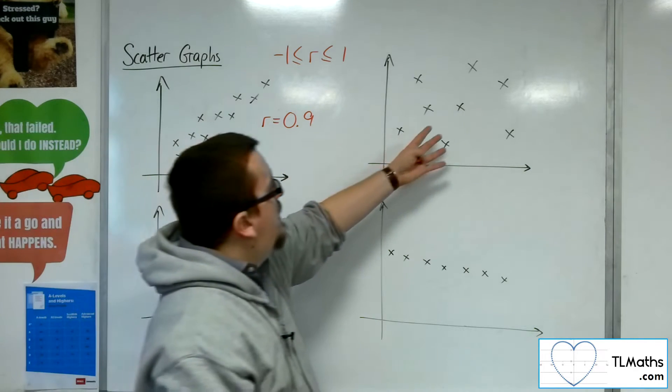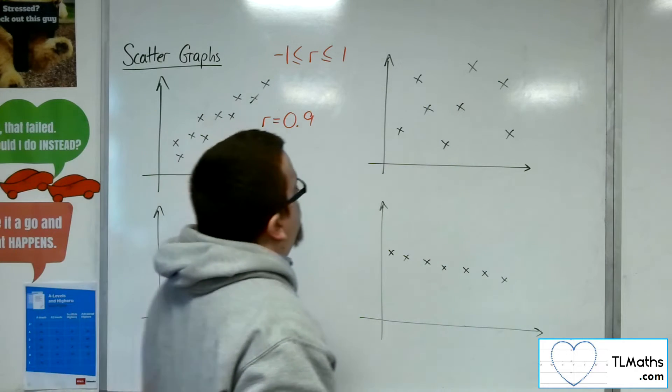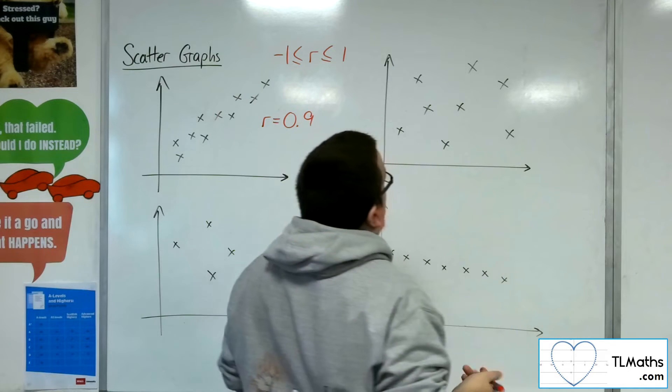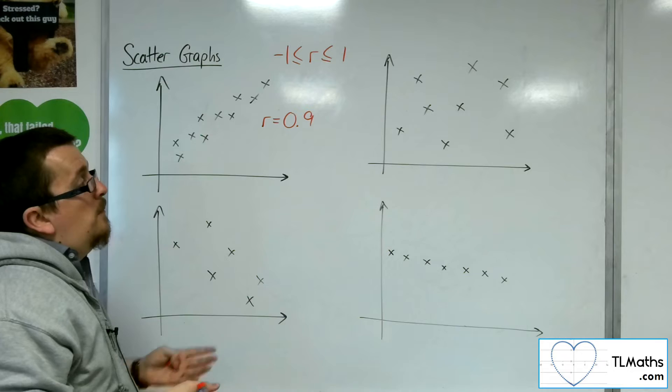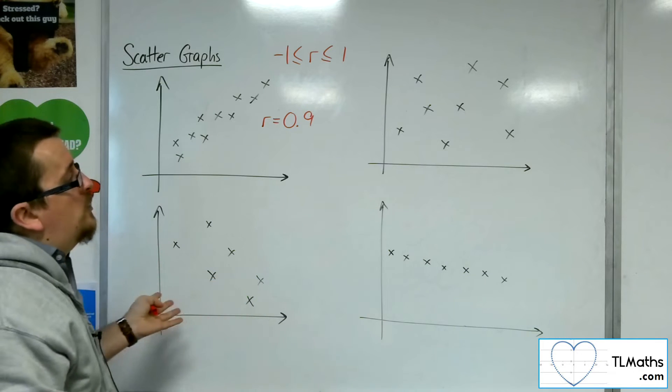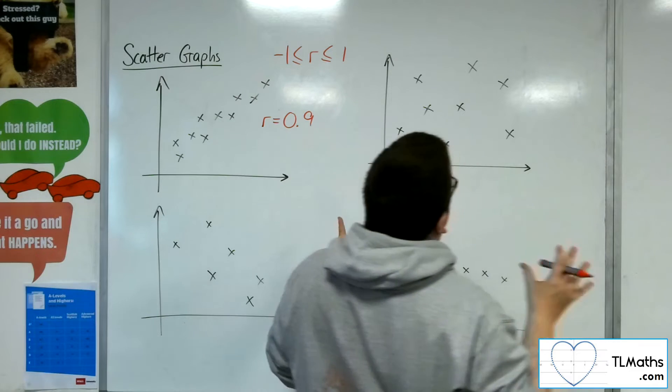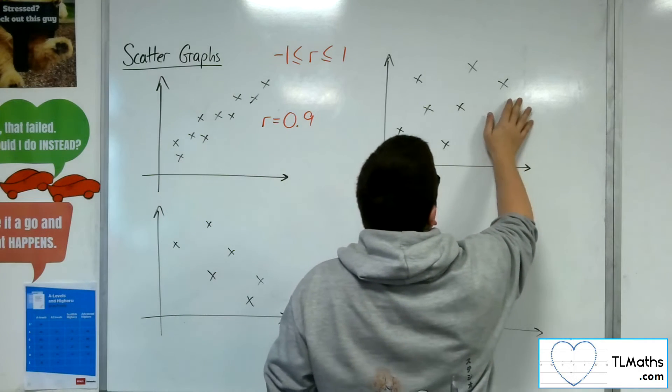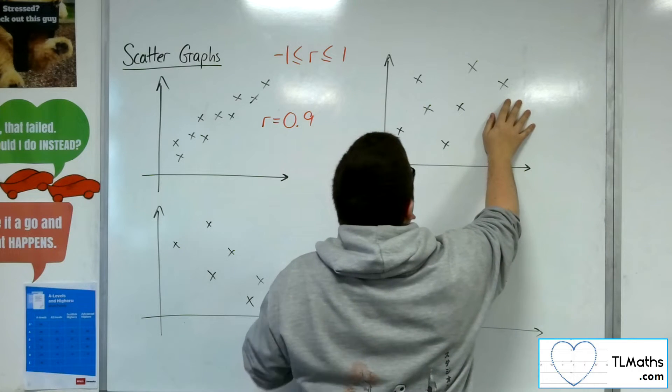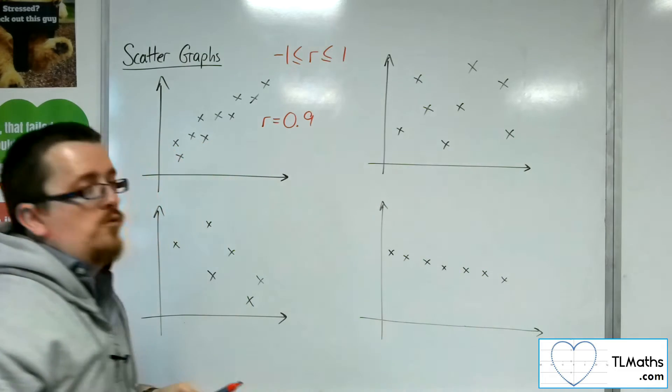This one over here doesn't really have much correlation at all. Would you say it's got a little bit more positive or negative correlation? I'd probably say it's got a little bit more positive. The reason is that if you extract one data value, you can start to see that maybe we are going from the bottom left to top right.